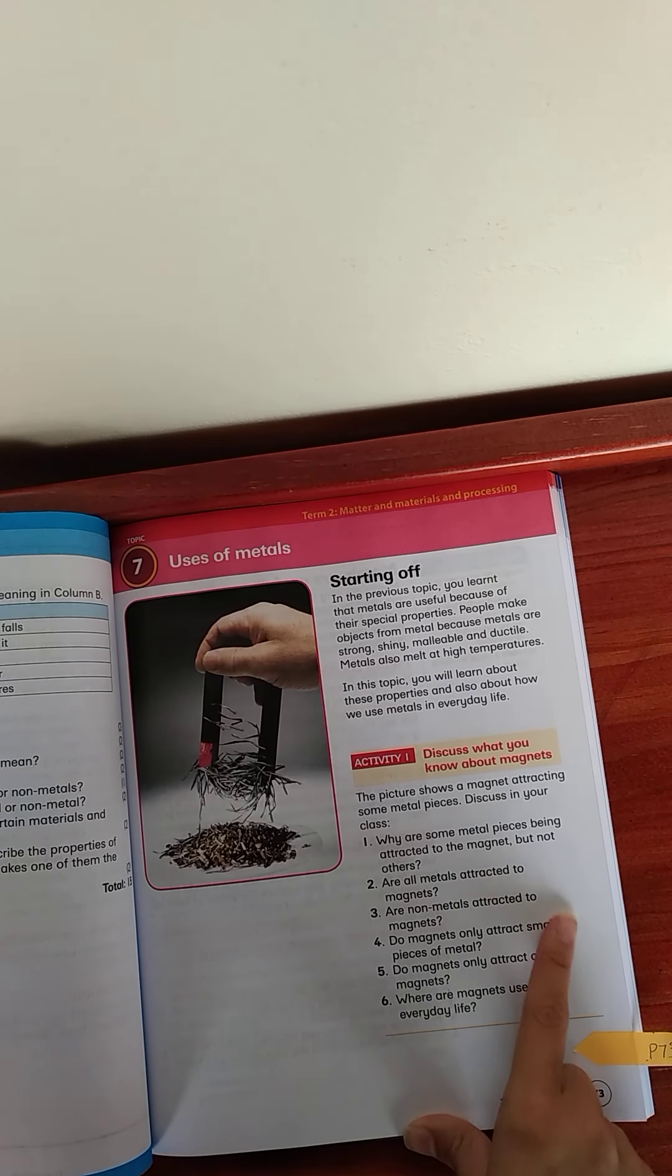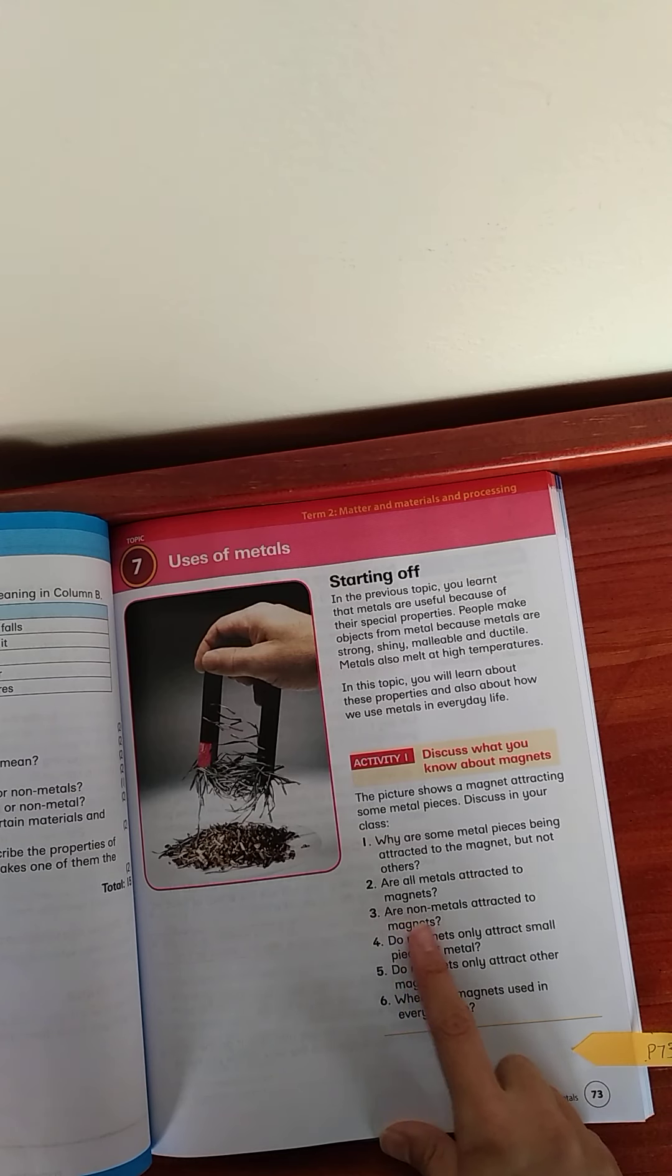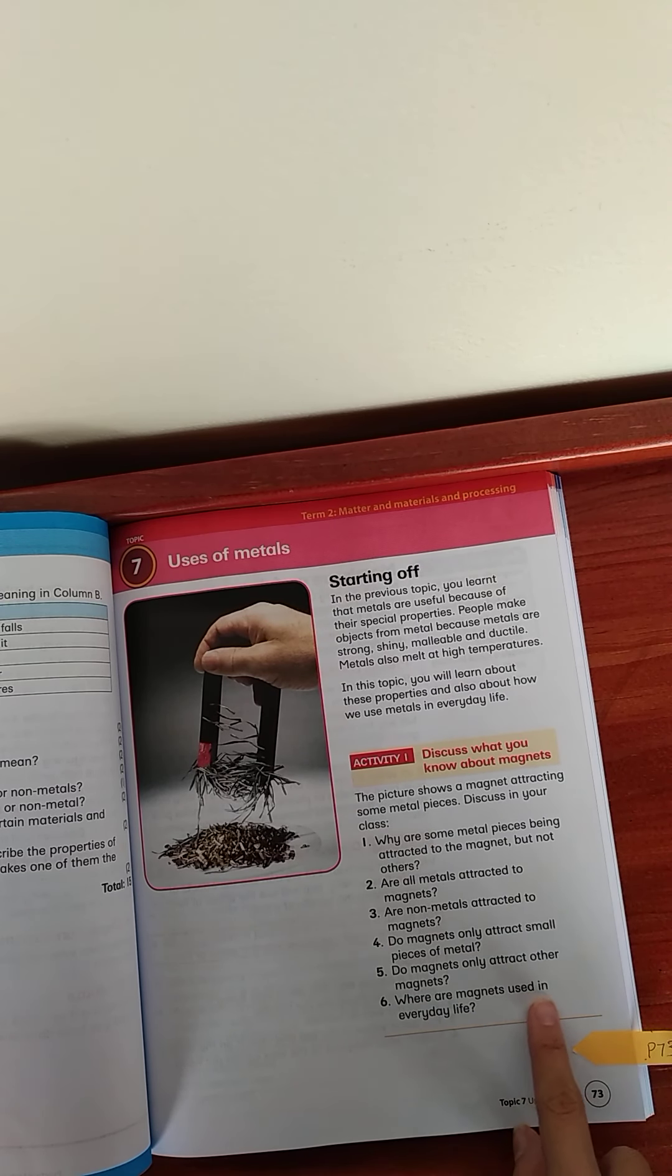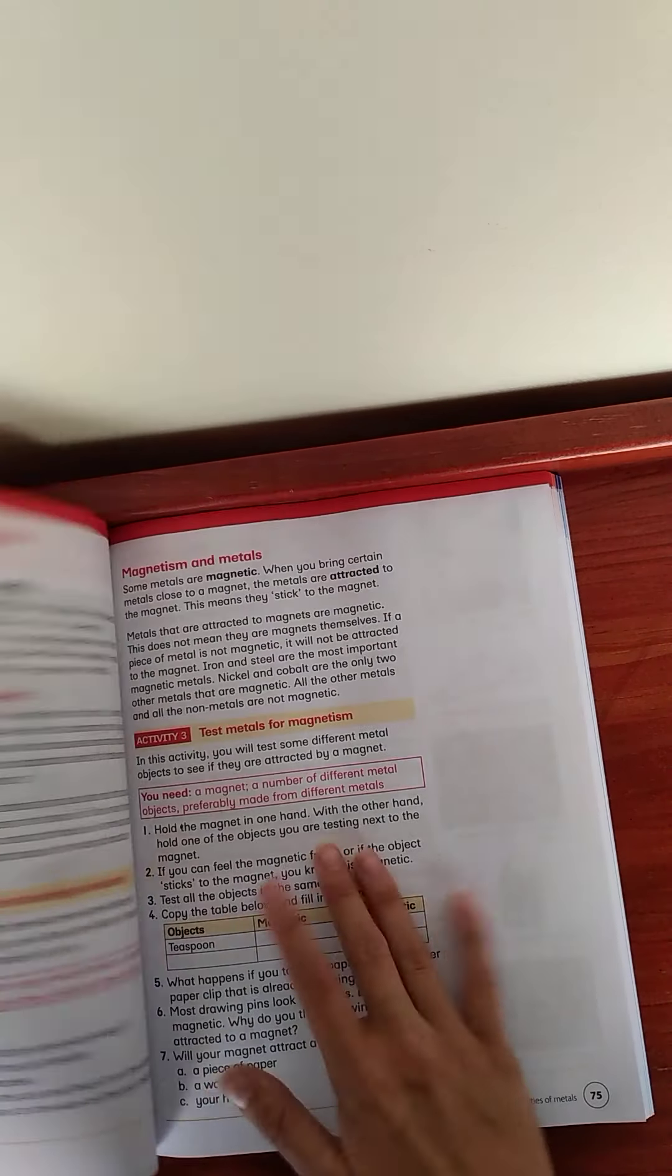Number two. Are all metals attracted to magnets? Are non-metals attracted to magnets? Do magnets only attract small pieces of metal? Do magnets only attract other magnets? And where are magnets used in everyday life?